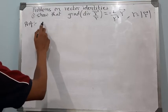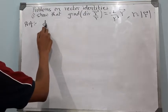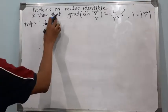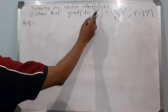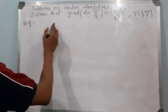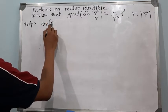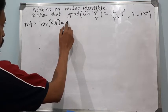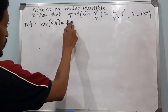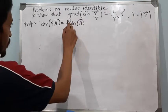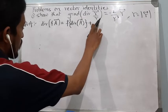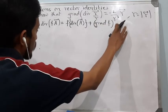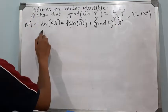To prove this result we will be making use of vector identities. This problem can be divided into two parts: first, finding the divergence of vector r/r. Since vector r is a vector and 1/r is a scalar, we use the identity: divergence of f times vector A equals f times divergence of A plus gradient of f dot A.